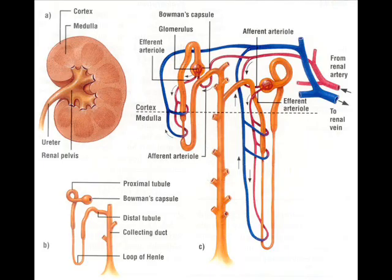The overall structure of the nephron is essential for excretion. The loop of Henle's main job is in osmoregulation, and the glomerulus and Bowman's capsule are used for ultrafiltration.